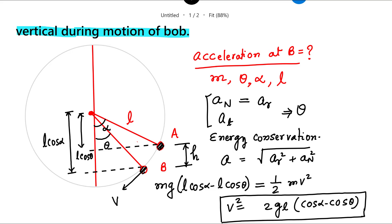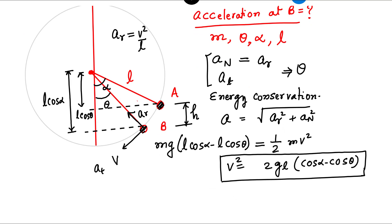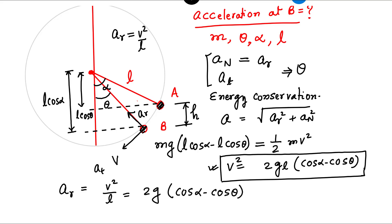Now let us find the acceleration. There is a tangential acceleration and a radial acceleration. Radial acceleration equals v²/R, and in this case R is L. Since we already know v², radial acceleration equals v²/L, which gives 2g(cos alpha minus cos theta).